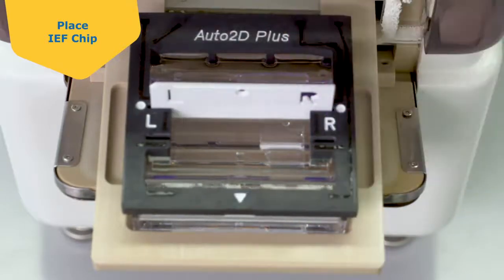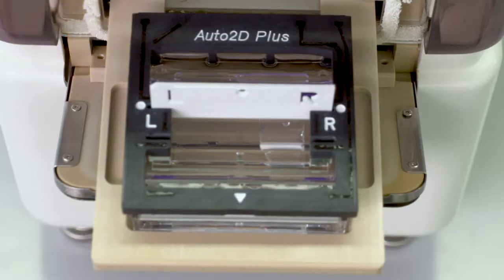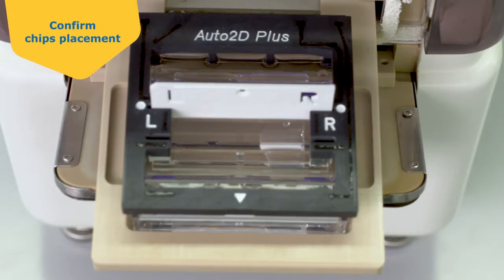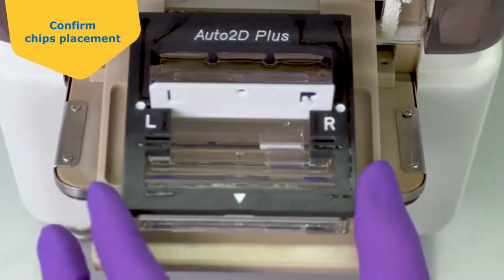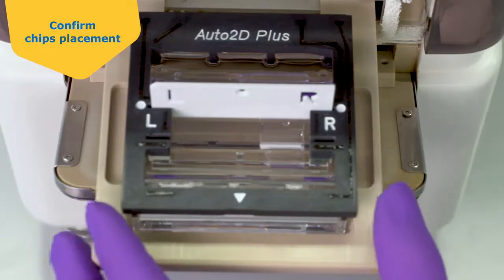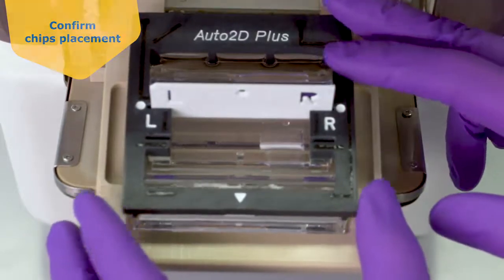Set the IEF chip into the Electrode Chip Plus slot marked with a white circle. Pay attention to the orientation of the IEF chip. The L should be on your left and the R should be on your right. After assembling the chips, confirm that the orientation of the IEF chip and the Solution Chip Plus are correct and that the Electrode Chip Plus is secure.